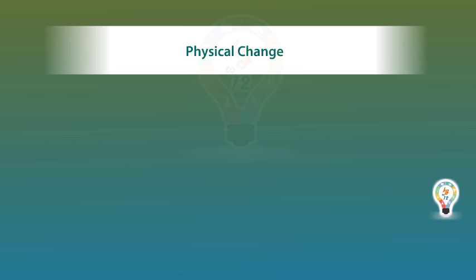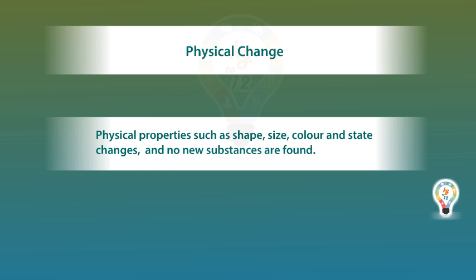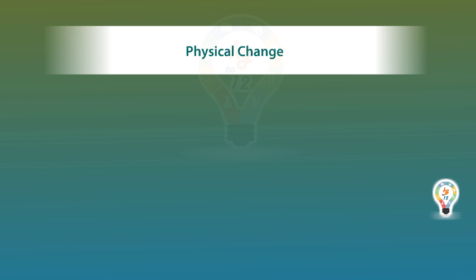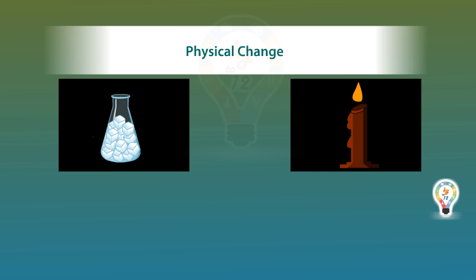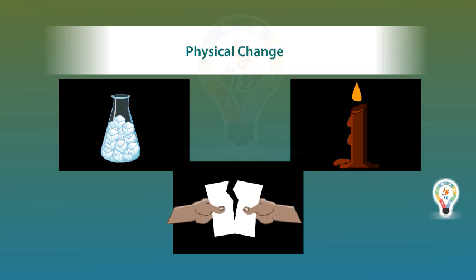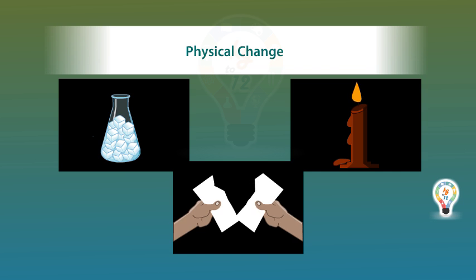In a physical change, only physical properties such as shape, size, color, and state change, and no new substances are formed. Examples are freezing of water, melting of wax, tearing of paper, etc.